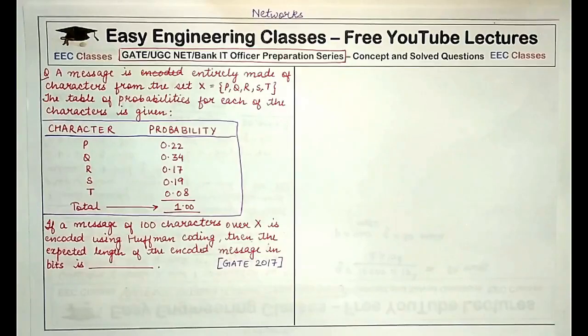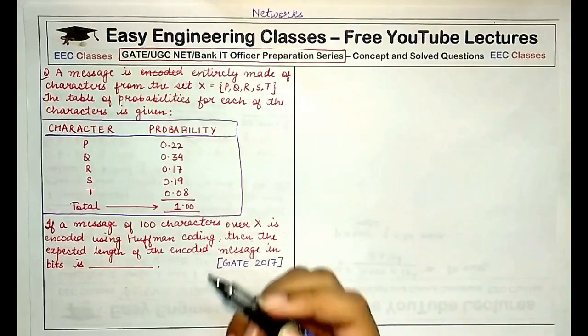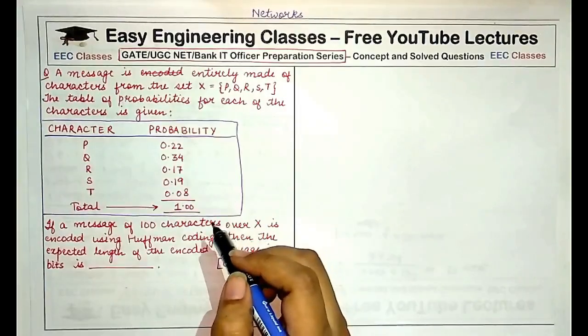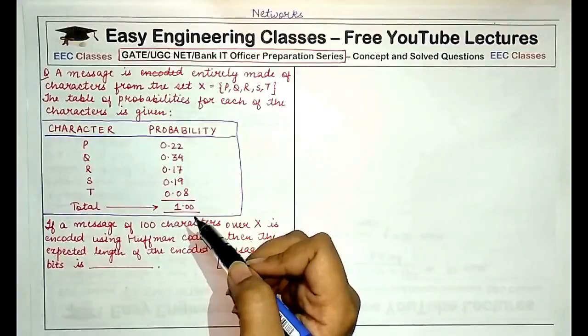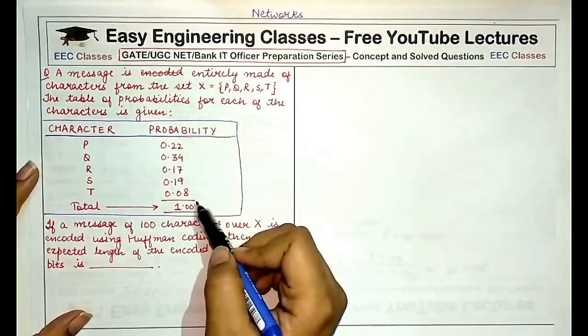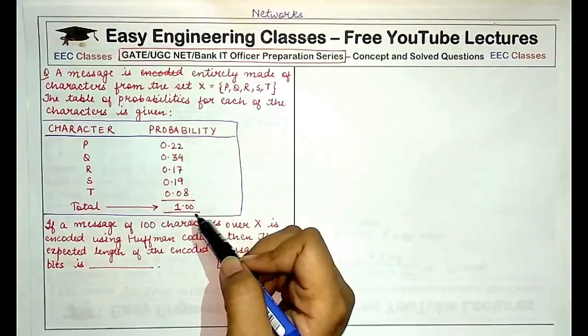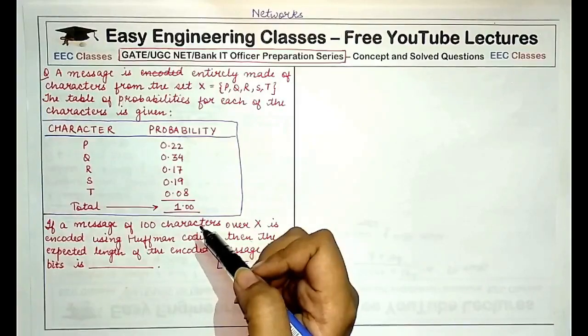In Huffman coding we basically follow two or three basic steps. Initially when we are provided with the probabilities of different characters, we arrange these probabilities in increasing order and start combining them to form a binary tree, and then we assign codes to each note that is formed in the final binary tree.